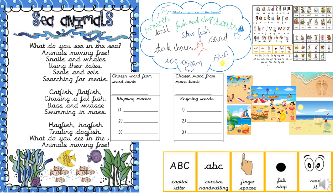Before I show you how I would write my poem, let's go through the things that can help you in your independent writing today. There's the WAGGLE — what a good one looks like — and you can use this if you need help with the poem structure and features. Remember we are writing a different poem about the beach, not the animals in the sea, so keep that in mind. You can use your planning from last week and all of the words you said you could see at the beach. We have a sound chart to help you if you find it tricky to spell any words — remember to use your phonics. You can look back at the pictures of the beach if you run out of ideas, and use your rhyming words from last week to make your poem fantastic.